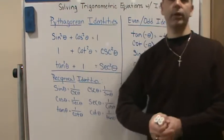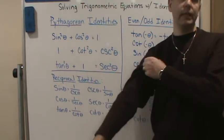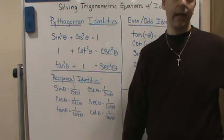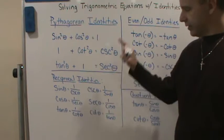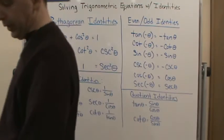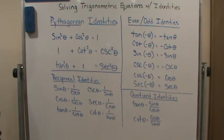Welcome back. Now we're going to start talking about using trig identities to solve trigonometric equations. This is a summary of all of the different identities that we've done up to this point.